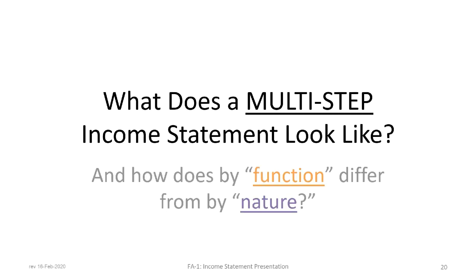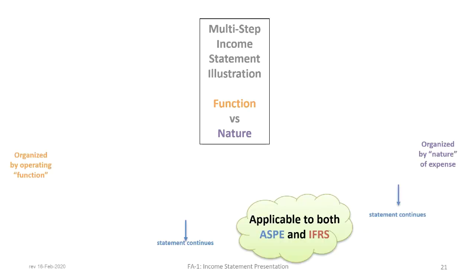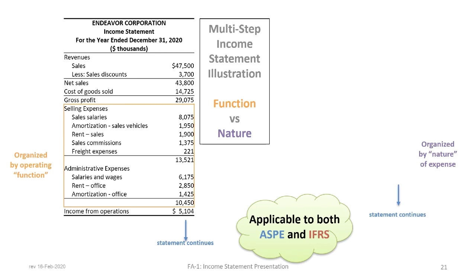We will now move on to the multi-step income statement and combine this with the different approaches to presenting expenses — either by function or by nature — looking at the multi-step statement under both ASPE and IFRS. On the left we have a multi-step income statement presented by function. Revenues include any and all sources of revenue from normal operations. If applicable, sales discounts, allowances, and returns are deducted as contra accounts to arrive at net sales.